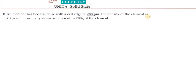Hi students, greetings from Success Education Academy. 12th chemistry, unit 6: Solid State. Book back evaluation problem — an element has a BCC structure with a cell edge of 288 picometers. The density of the element is 7.2 grams per centimeter cube. How many atoms are present in 208 grams of the element?